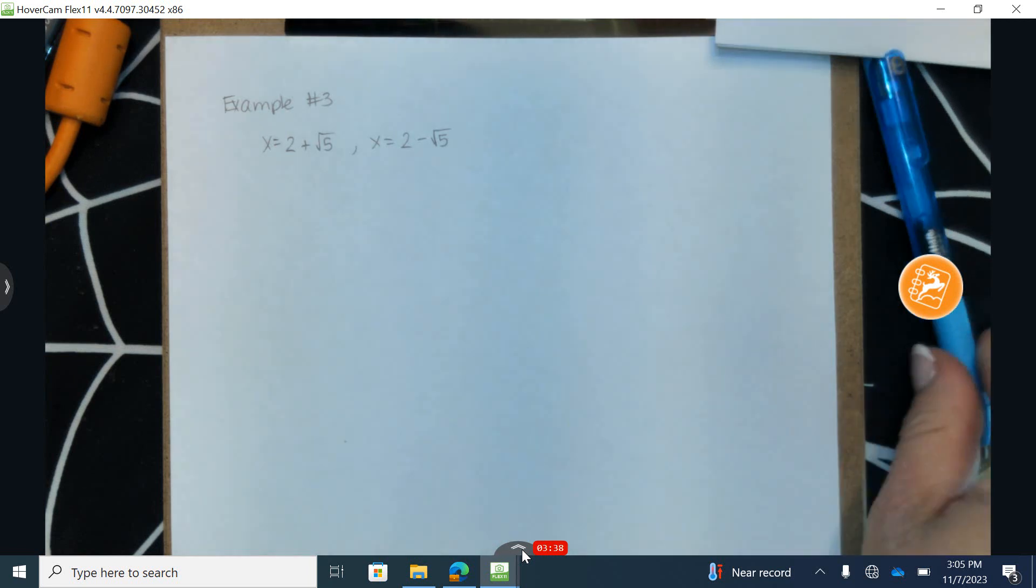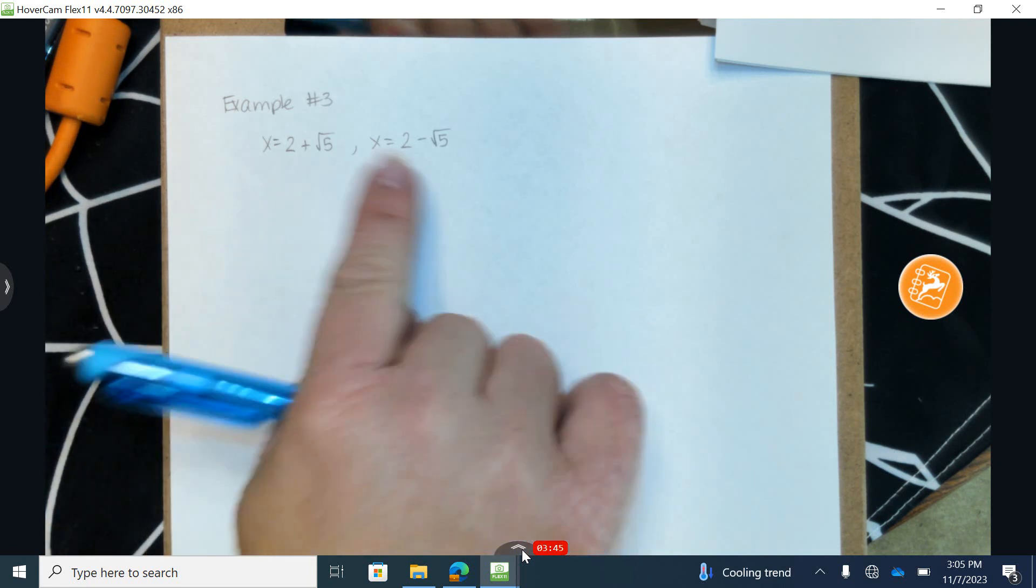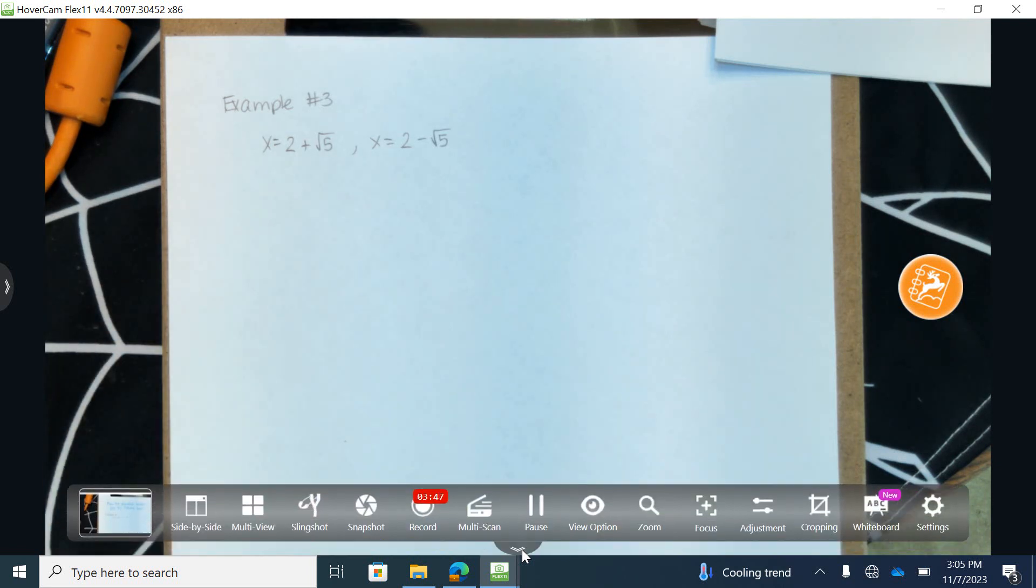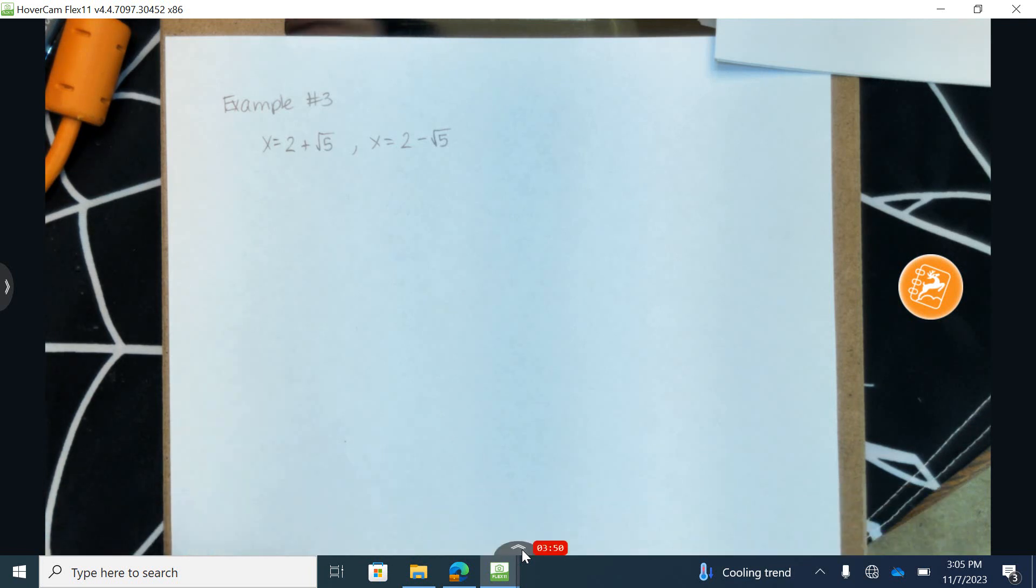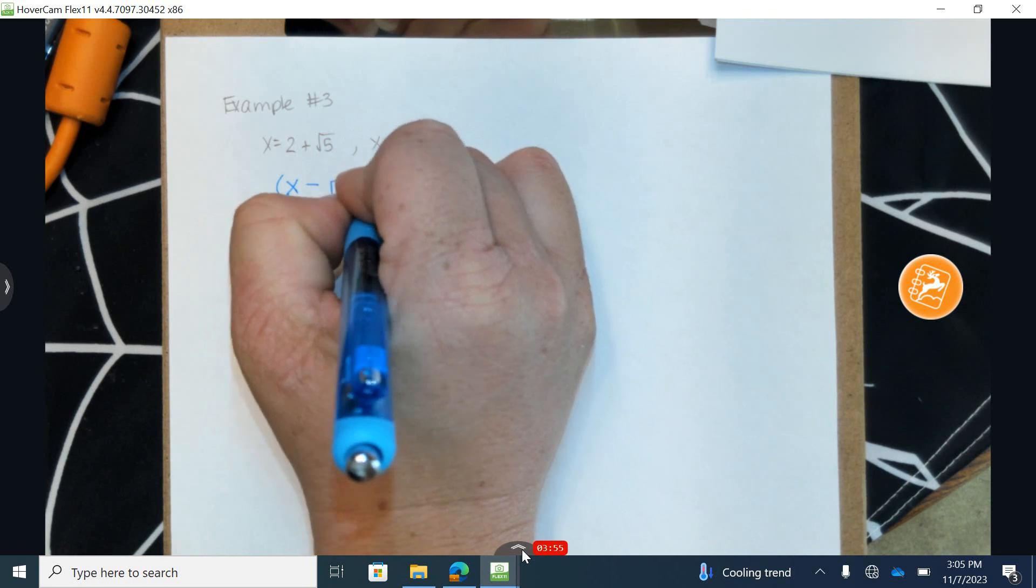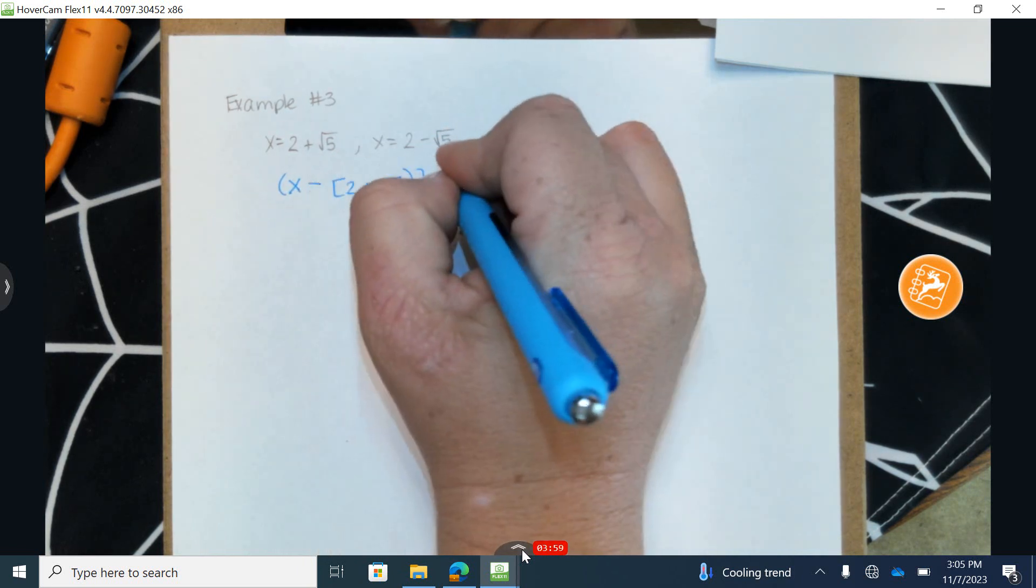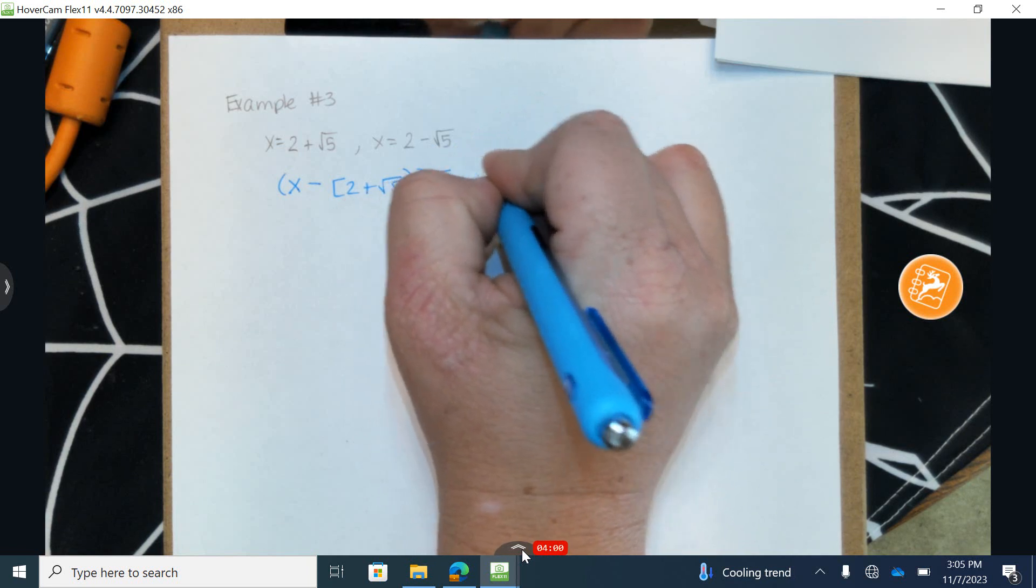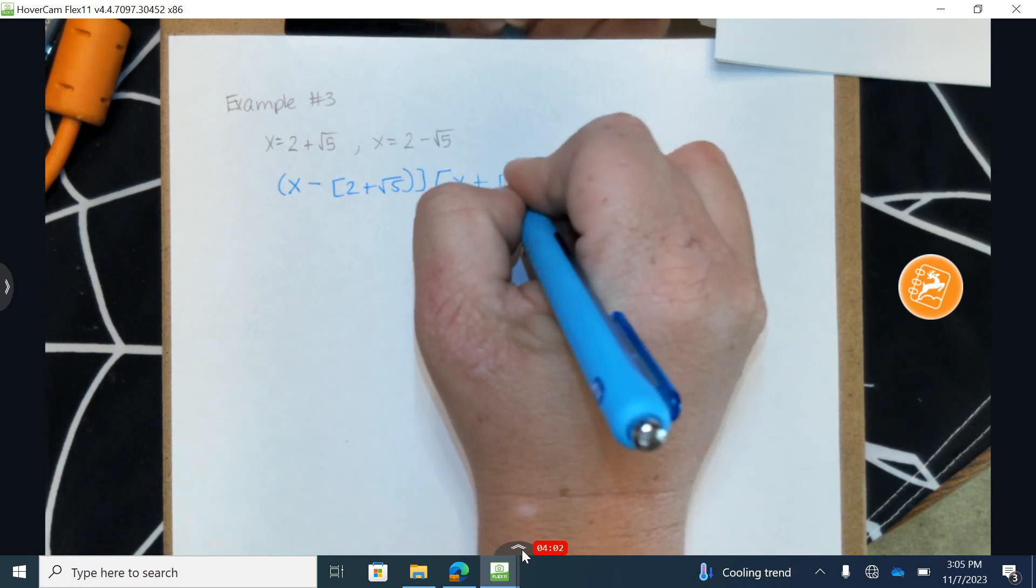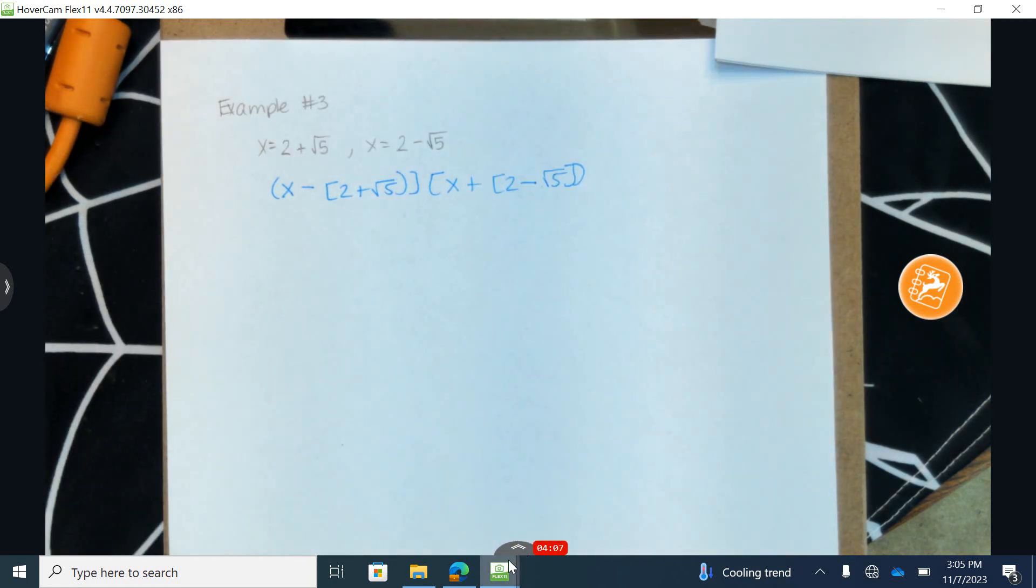Okay, example number three. It's still the same goal in mind. We want to be able to create a function, a polynomial function, that contains the following solutions. So I'm going to start, let me move this down, move that out of your way, by writing x subtract 2 plus radical 5. And I'm going to have x plus 2 minus radical 5. Let me move this off the side one second.